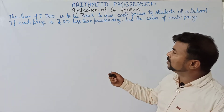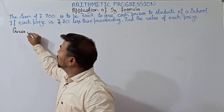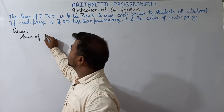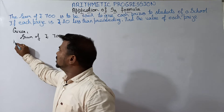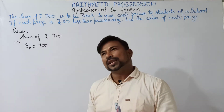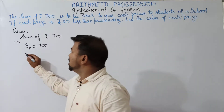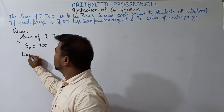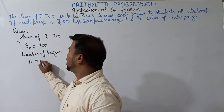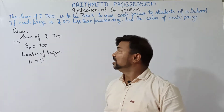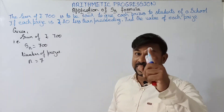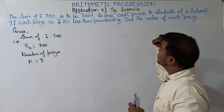So let us go with the sum. What is the given concept? Sum of rupees 700 — that is the first one. So I can take it as Sn is equal to 700. Now totally how many prizes is he having? Seven. Number of prizes: n is equal to 7. We got the first condition: the sum of the total money is 700, and the number of prizes is 7.